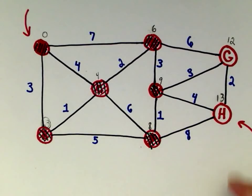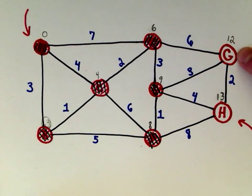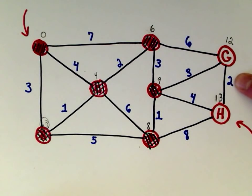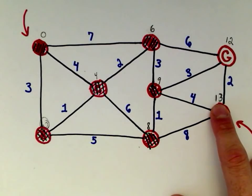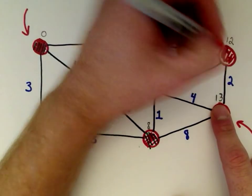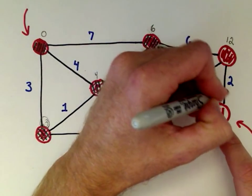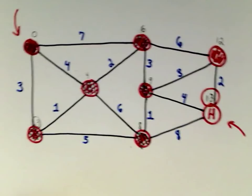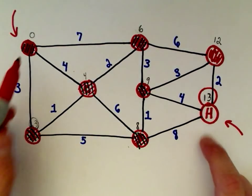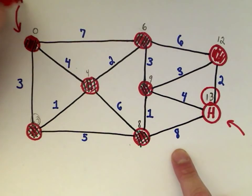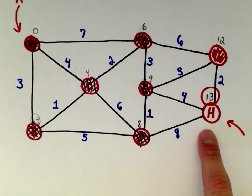Last but not least, let's look at vertex G. The only thing left to check is from G to H: we knew there was a path length of twelve, plus two more, gives us fourteen — which is greater than the path length of thirteen we already found. So we've now checked vertex G as well, which means we've found our shortest path length of thirteen from vertex A to vertex H.